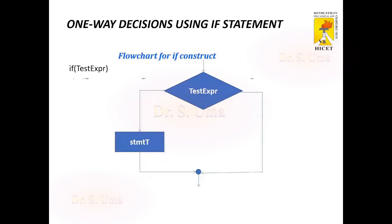This slide gives us the syntax for making use of one-way decisions as well as the flowchart for using the if construct. The test expression is first evaluated. If it is true, then statement T will be executed. Else, the control will be transferred to the statement following the test expression.